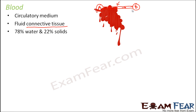Looking at the composition of blood, it consists of 78 percent water and 22 percent solids. These solids include proteins, minerals, lipids, glucose, and amino acids. Because almost 78 percent is water, blood is very fluid and flows easily from one place to another.